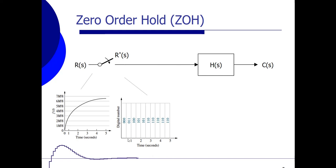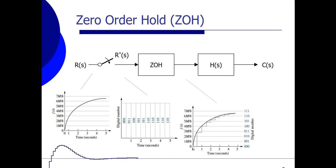The easiest way of having information in between sampling points is by holding the sampling value of the first sample, then holding that value until another sample point is taken, and holding that value again. We take a sample, hold it, take another sample, hold it, and so on. This can be done by implementing a block called a zero-order hold block — zero-order hold indicating that we hold the sample in between sampling points.